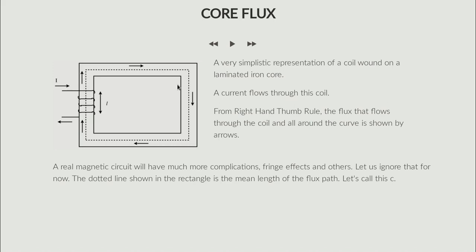Since we have a core, the flux does not complete the path from all directions as it did when the coil was wound in air. Now the flux flows through the magnetic path through this core. Iron is a good medium for magnetic flux to flow through, as opposed to air, which is why the flux prefers to stay in the iron core. The core forms the magnetic path.